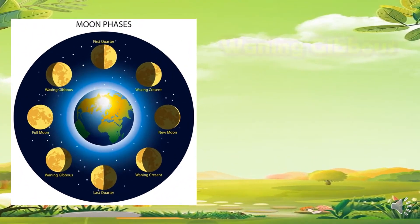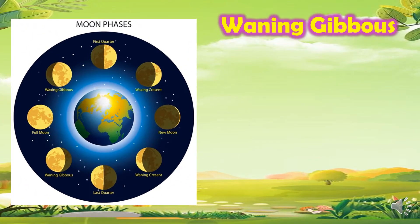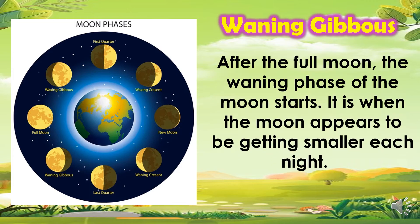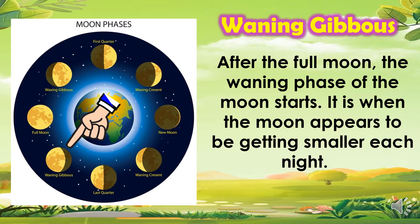Another phase is the waning gibbous. After the full moon, the waning phase of the moon starts. It is when the moon appears to be getting smaller each night.